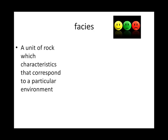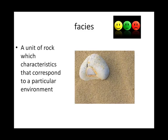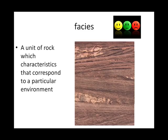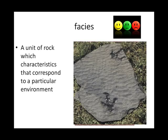A facies is a unit of rock with characteristics that correspond to a particular environment. The characteristics could be the size of the sediment, or the rounding of the sediment. It could be whether you have cross-bedding, whether you have ripple marks, or fossils.